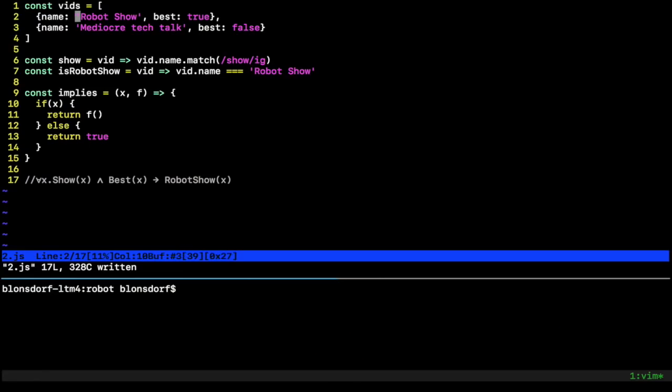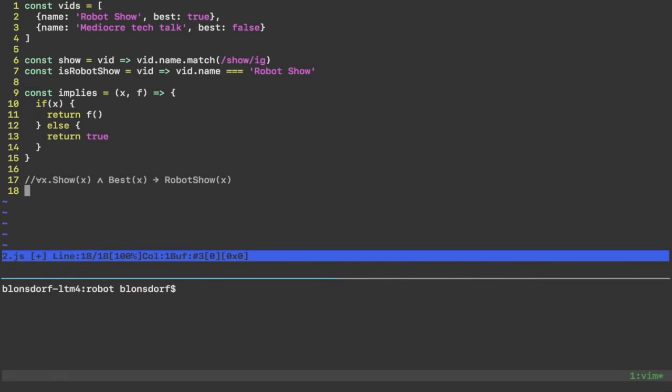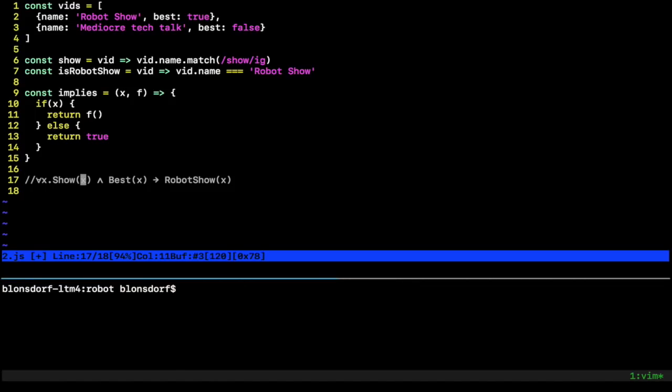Okay. So we have some vids here and we've got the robot show and the mediocre tech talk here, and some helper functions. And here's our implication function here. And so let's go ahead and write this out and then we'll circle back and look at this one. So for all X, if X is a show and X is the best, that implies it's the robot show. Okay. So let's write this out. So for all our vids, all our X's in our domain, every, if it's a show and it's the best, right? It's going to be the best. That implies, implies that it is the robot show. So, okay.